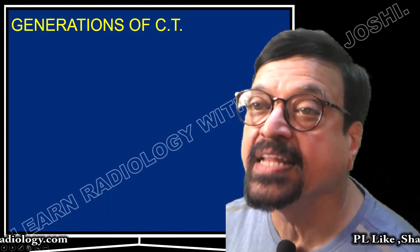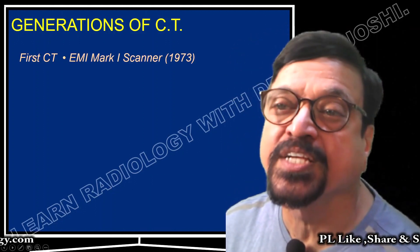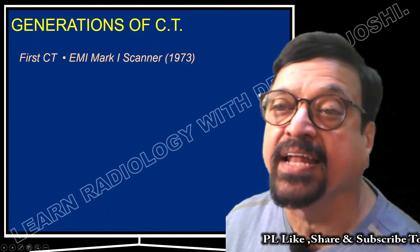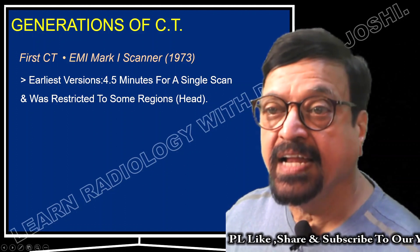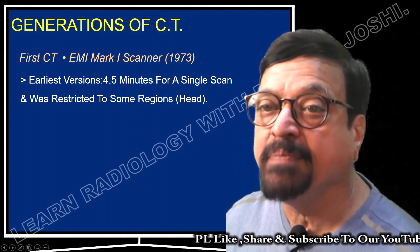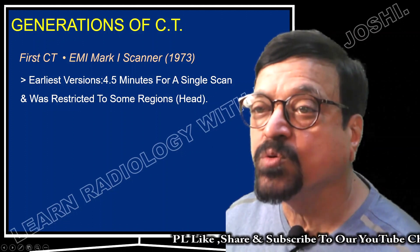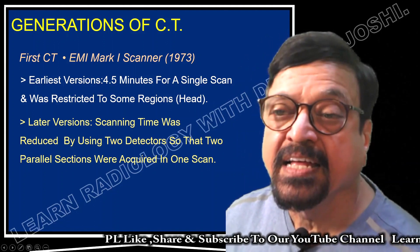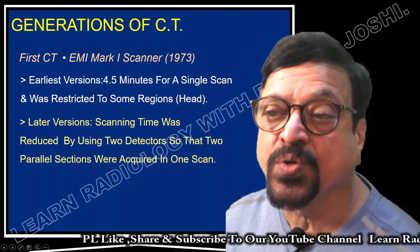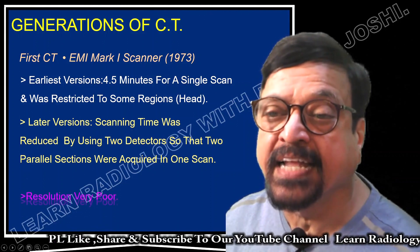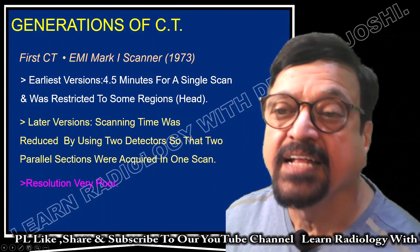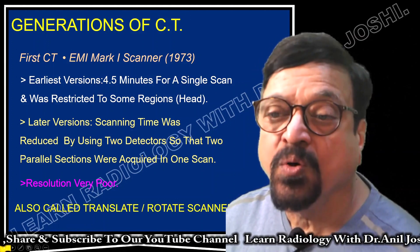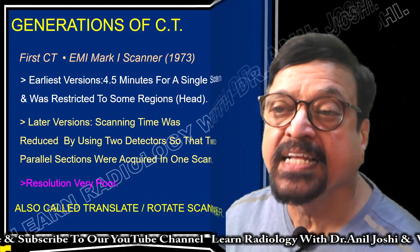What we are seeing today are third or fourth generation scans, which are really fast. The first CT was called the EMI Mark 1 scanner. The earliest version took 4.5 minutes per single beam and was restricted to regions like head scanning only. Later, scanning time was reduced using two detectors so that two parallel sections are acquired, making it multi-slice, though resolution was not as good. These are called translate-rotate scanners.